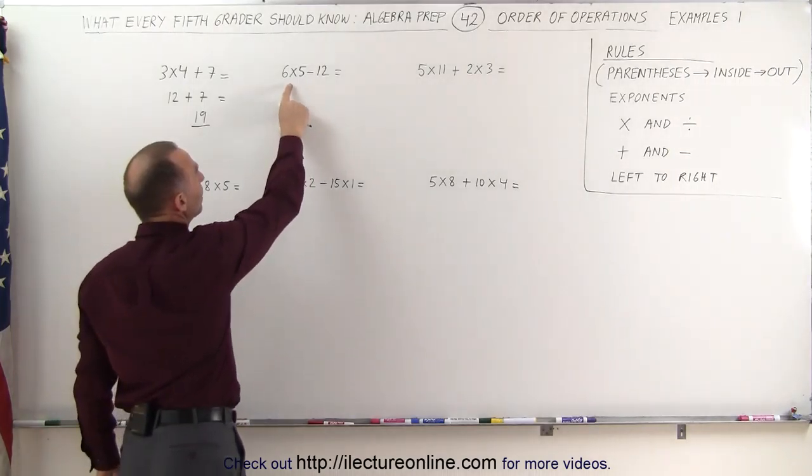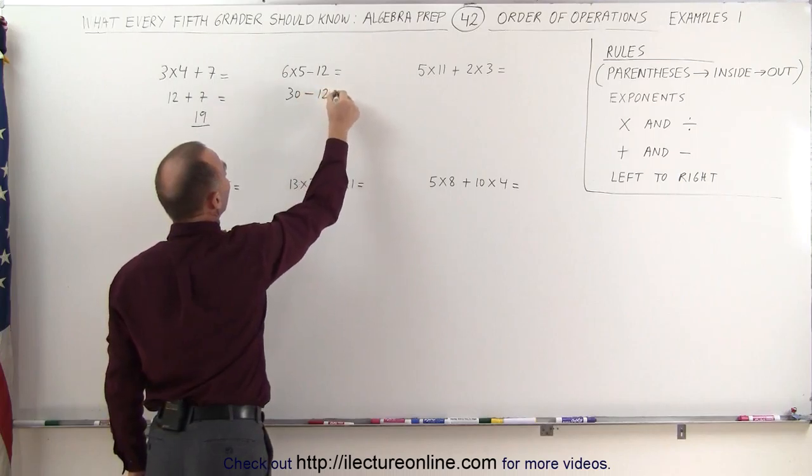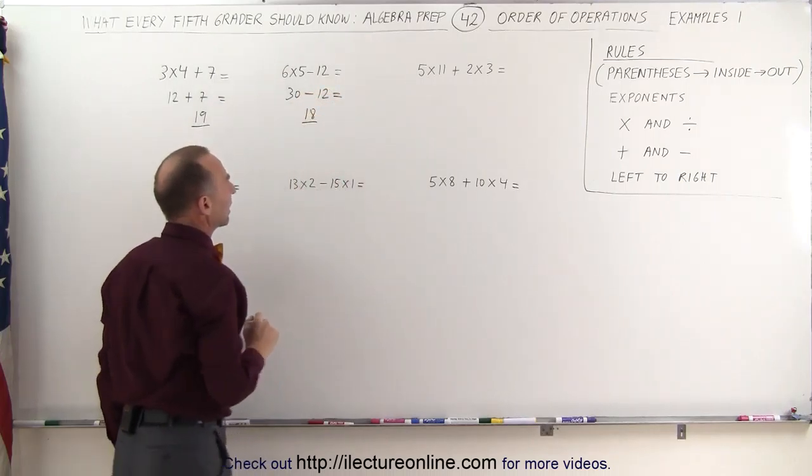Here again, you do the multiplication first, 6 times 5, that's 30 minus 12, and 30 minus 12 would be 18, and that's the correct answer there.